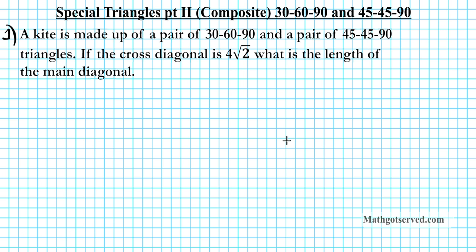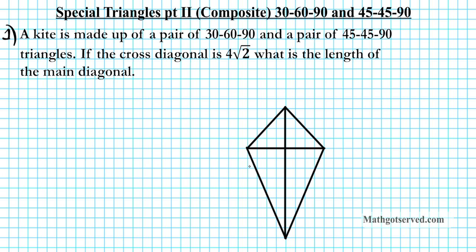Let's start off by drawing the kite. A kite is basically a quadrilateral where two disjoint pairs of consecutive sides are congruent. This is the first disjoint pair and these two are congruent — this side is congruent to that side. This is the second disjoint pair of consecutive sides and these are also congruent to each other.